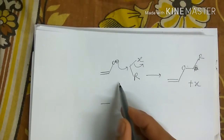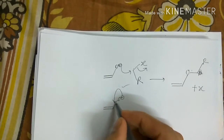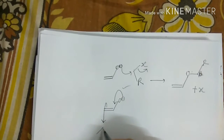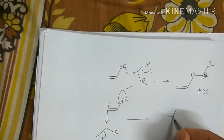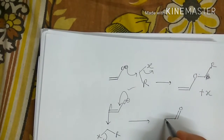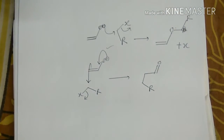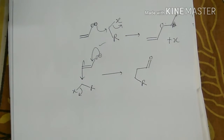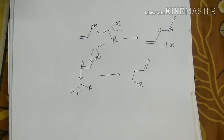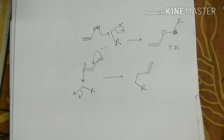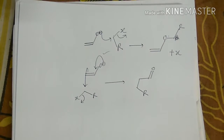If the attack occurs from the carbon side instead, this is called C-alkylation. In any nucleophilic substitution reaction, what is most important is the nucleophilicity of the nucleophile.